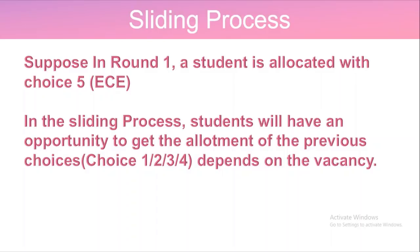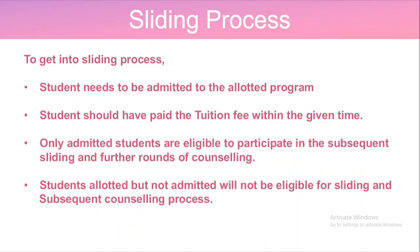Regarding the sliding process — suppose in Round One a student is allocated their 5th choice, meaning choices 1 to 4 were computer science related specializations but they were allocated Electronic and Communication Engineering. SASTRA provides one opportunity to enter the sliding process. To be eligible for the sliding process, you must have paid the tuition fee within five to six days or one week, after which you are automatically eligible to participate in the sliding process.